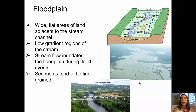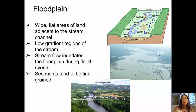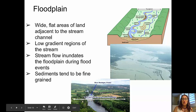Flood plains are large, wide, flat areas of land that are adjacent to the stream channel and roughly parallel it. They form in areas where the stream has a low gradient and are inundated by water during floods. Sediments in a flood plain tend to be fine-grained. In this picture, you can see an aerial photo of a flooded stream with water overlapping onto the flood plain, and another image showing the stream channel with an arrow indicating the width of the flood plain.